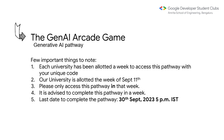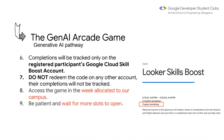We advise you to complete the GenAI pathway within next week itself, since the deadline is 30th September 2023 at 5pm. There are two pathways — the GenAI pathway is smaller and the GCCF pathway is bigger. Complete the GenAI pathway in one week and keep the remaining three weeks of the month for the GCCF campaign.